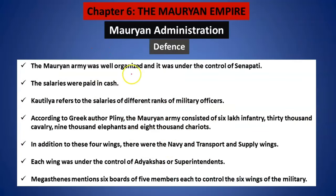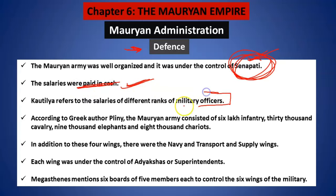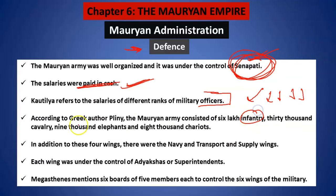In the administration, defense was also very well organized and important. The chief of the entire defense administration was Senapati. All the soldiers were given salaries in cash. There were many military officers of different ranks, which is also clearly mentioned. There were different kinds of subsections within the defense: infantry, cavalry, elephants, and chariots.